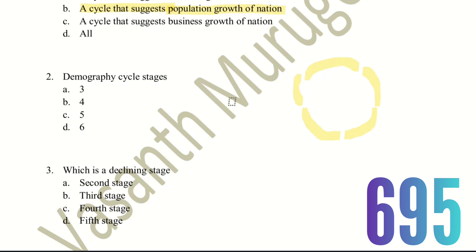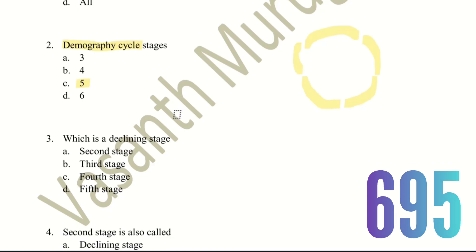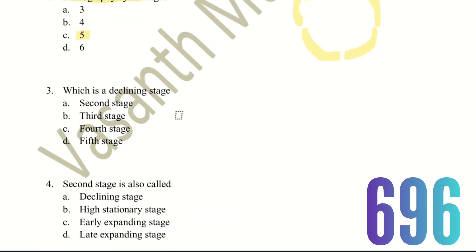In the demographic cycle there are 5 stages — stage 1, 2, 3, 4, and 5 — hence it is called the Demography Cycle. Third question: which is the declining stage? The choices are 2nd stage, 3rd stage, 4th stage, or 5th stage.